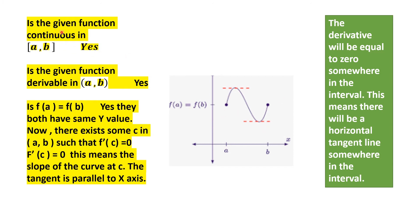Now take another function and apply the same steps. Is the given function continuous? Yes, it is continuous because you are able to make this graph without lifting your pen. Is the given function derivable in the open interval (a, b)? Yes, it is derivable. This point is a and this point is b. Is f(a) equal to f(b)? You can see clearly from the graph that f(a) equals f(b) because they have the same y-value. There exists some c in the open interval (a, b) such that f'(c) equals 0, meaning the tangent is parallel to the x-axis. Yes, this function fulfills Rolle's theorem.